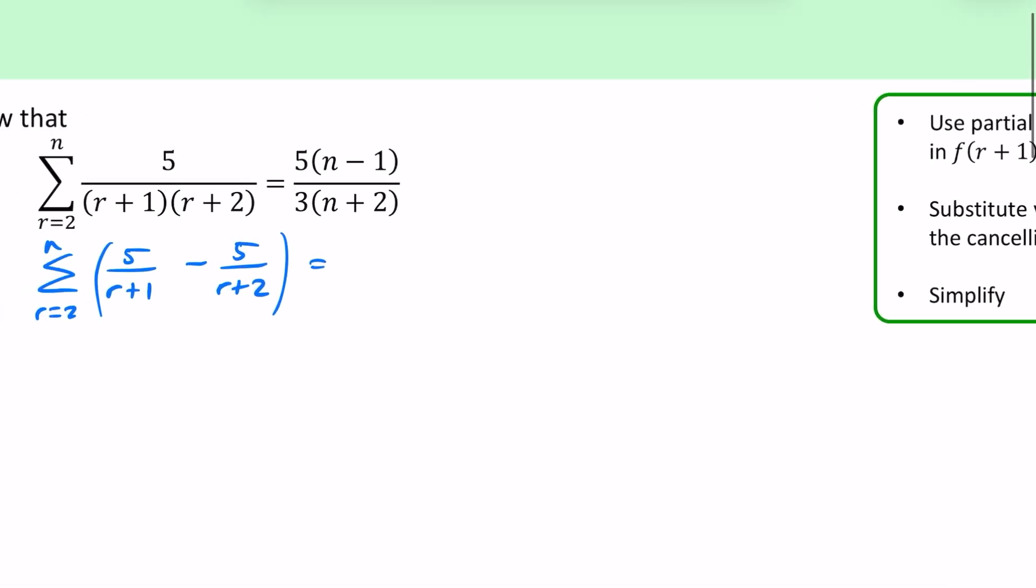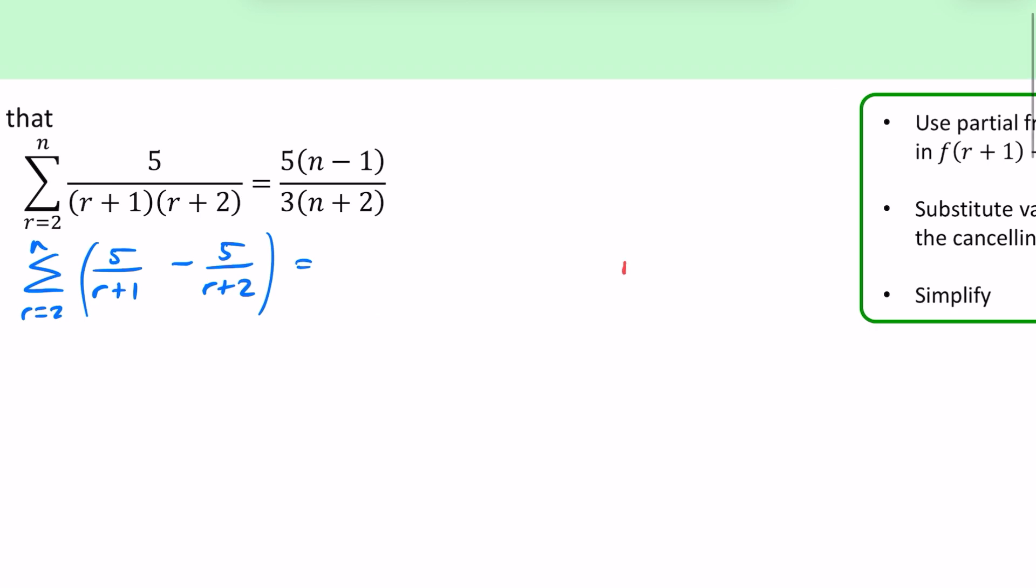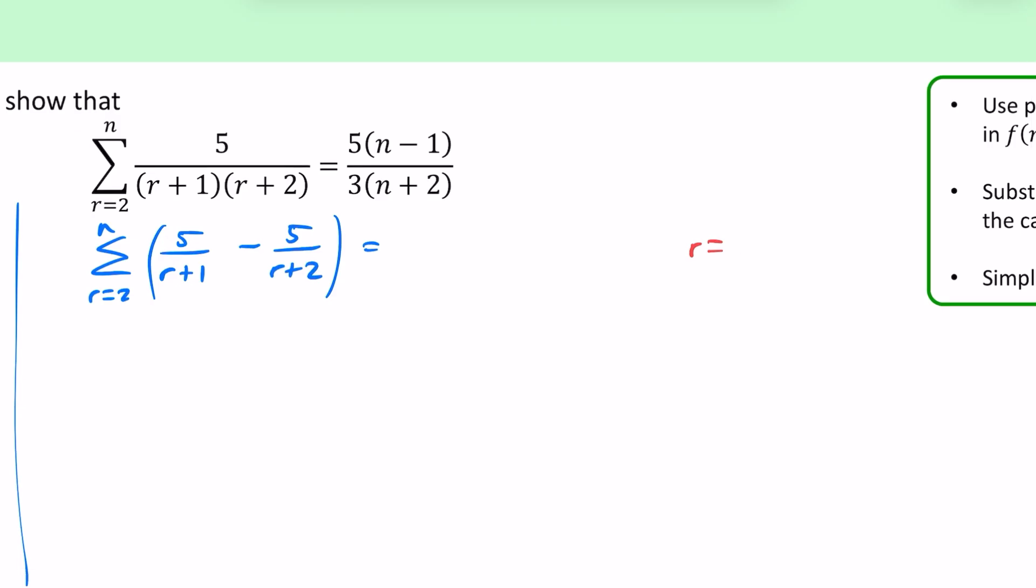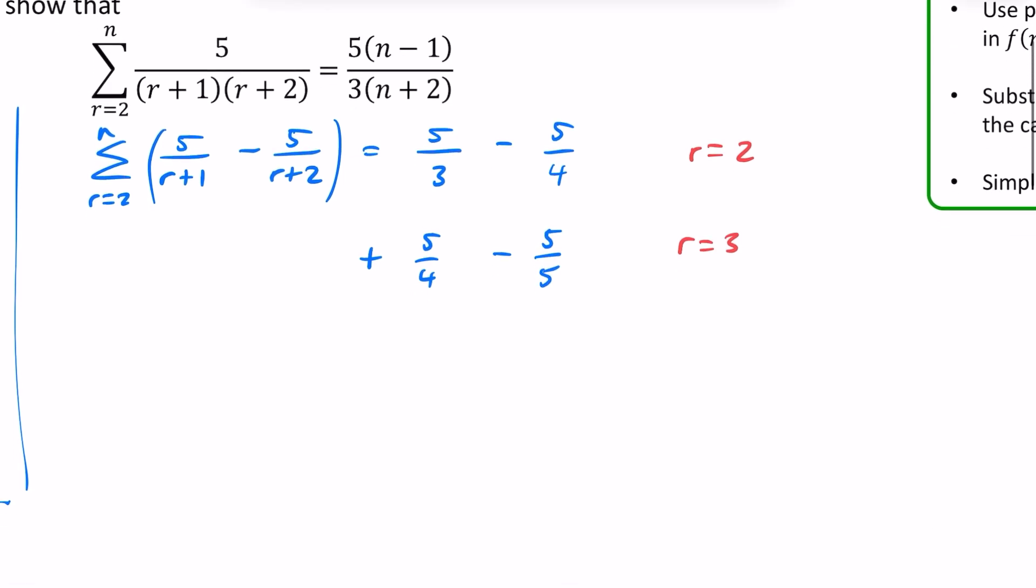So we've written it in partial fractions form, we're now just going to do some of the value substitution. I didn't even notice this, but r equals 2, a bit sneaky here, we're going to be starting with the first value, which is not r equals 1. So when we sub in r equals 2, we will have our 5 over 3 minus 5 over 4. And then when we substitute in r equals 3, that will be a 5 over 4 and a minus 5 over 5. I am just going to do one more with r equals 4.